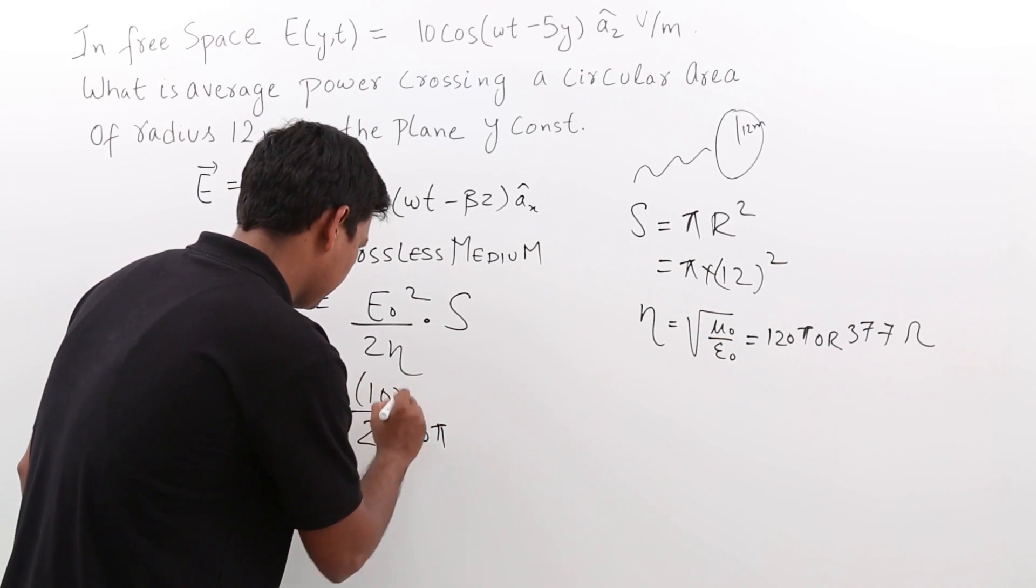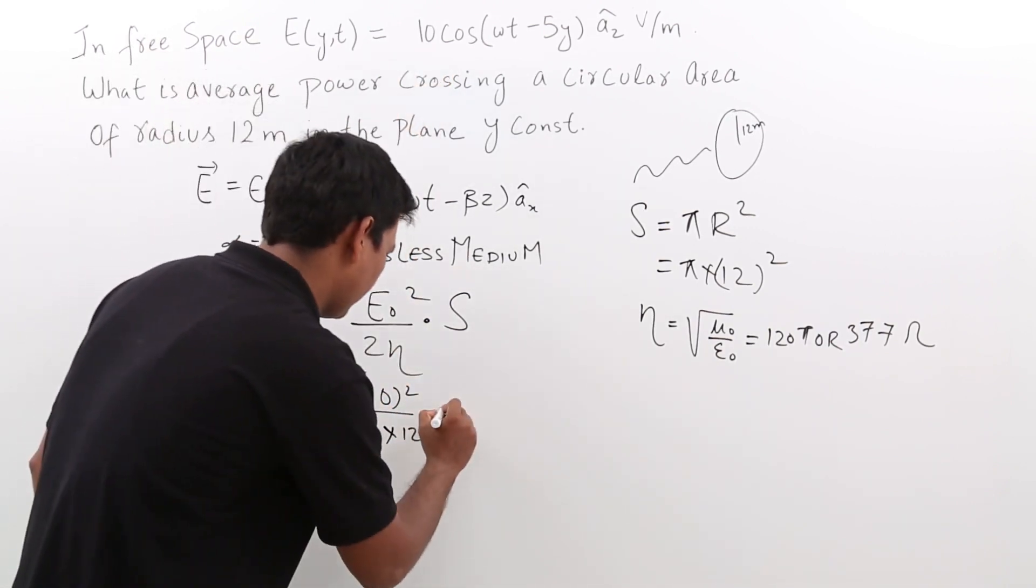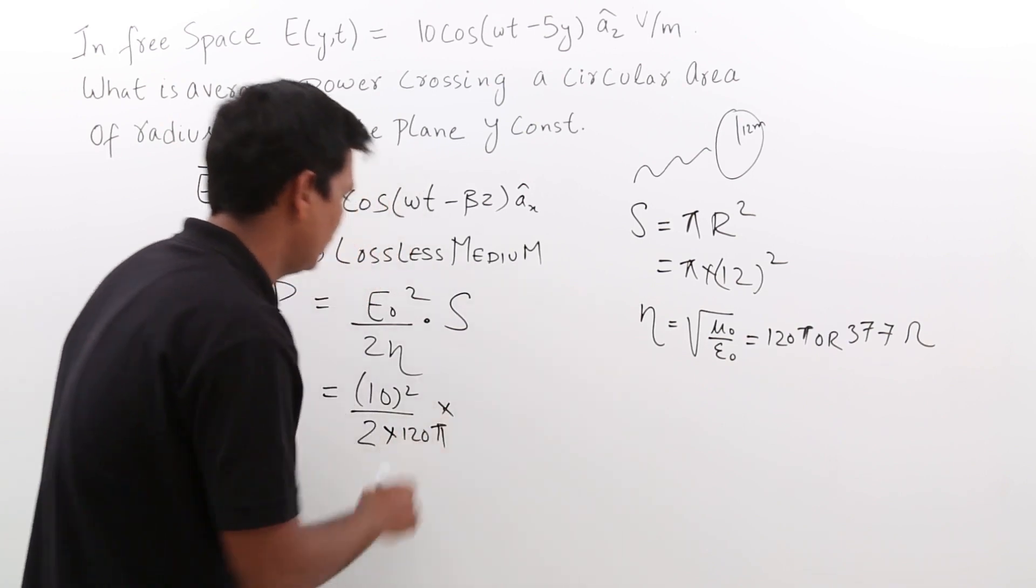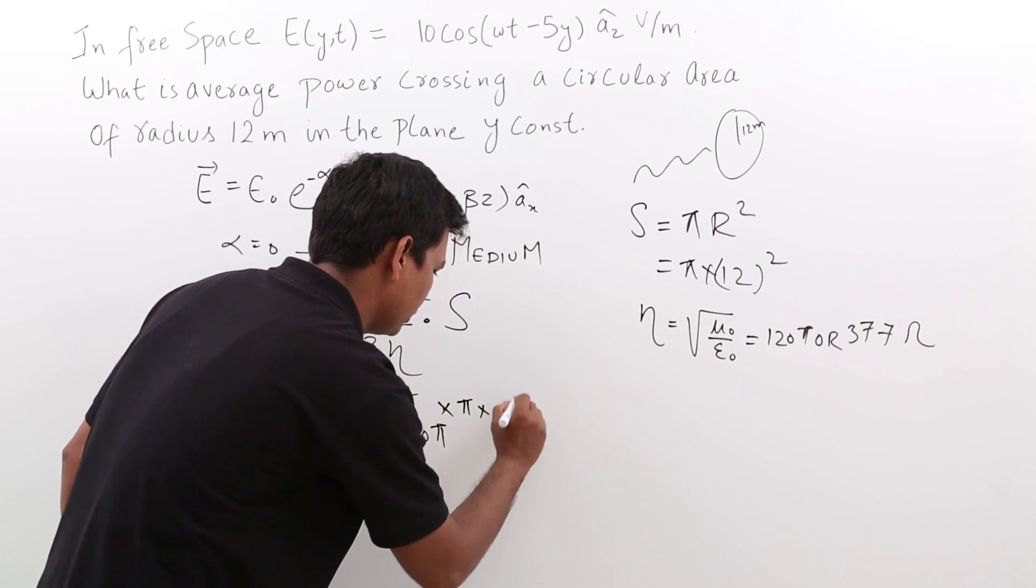So, this will be 10² because amplitude is 10 and it is 10² into the area is πr² which is nothing but π into 12².